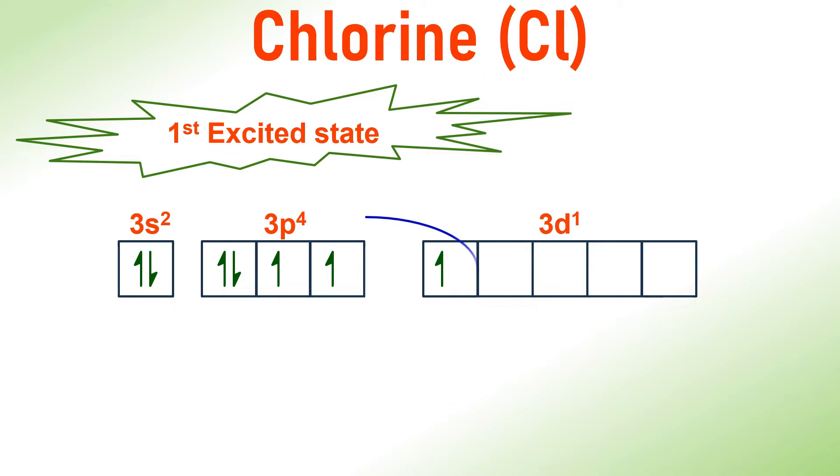This state is referred to as the first excited state of Chlorine. Now you can observe, there are three unpaired electrons. Therefore, Chlorine can form three bonds in the first excited state.